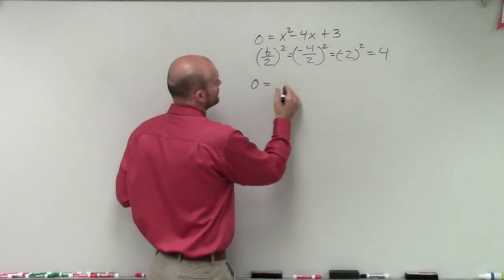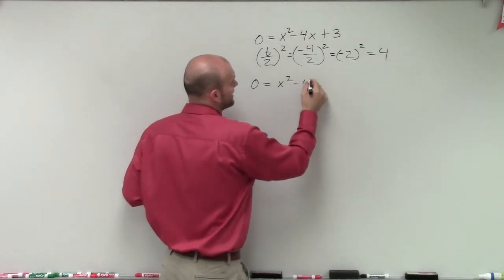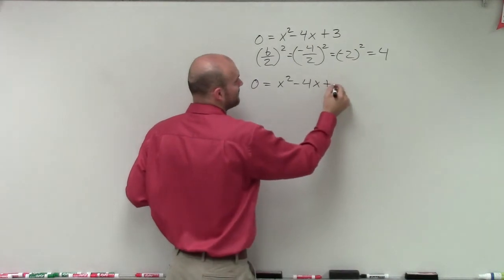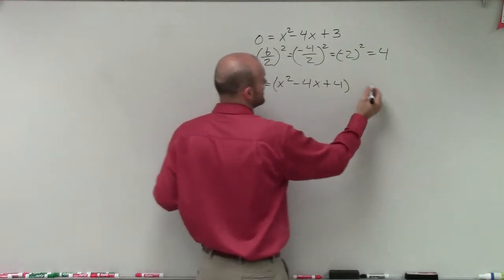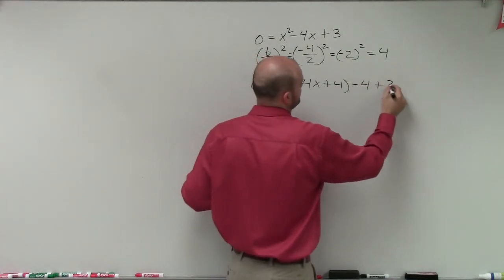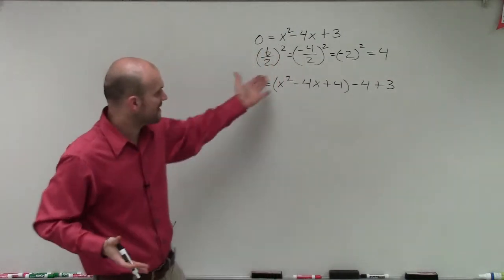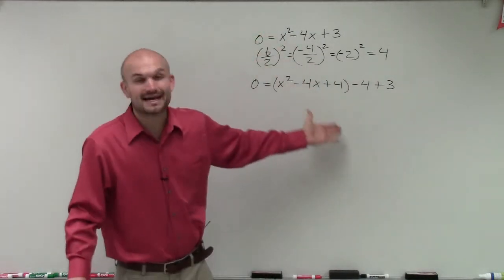So I write 0 equals x squared minus 4x, then add 4 and subtract 4. Notice if I remove these parentheses, I would have the exact same equation.